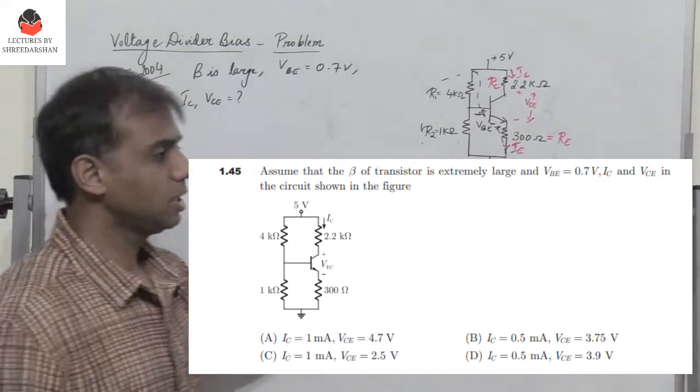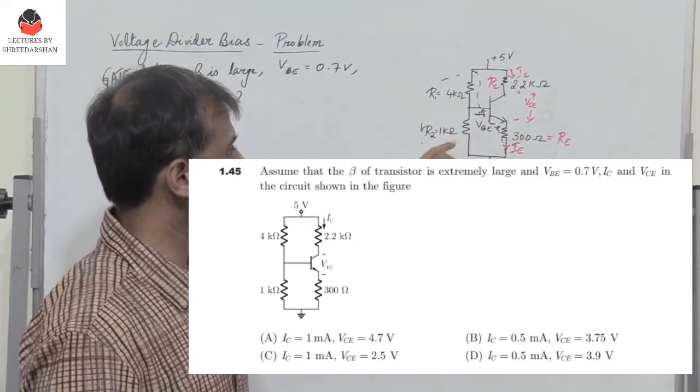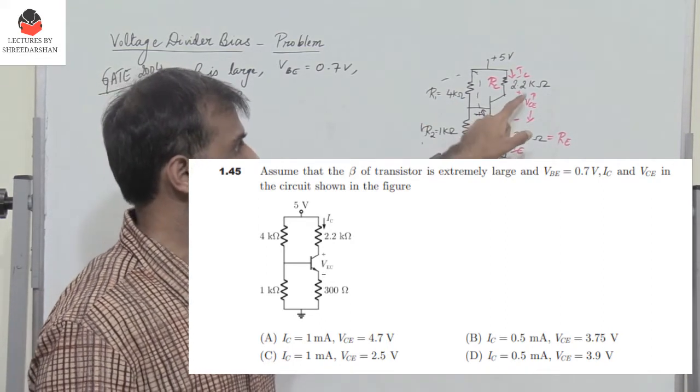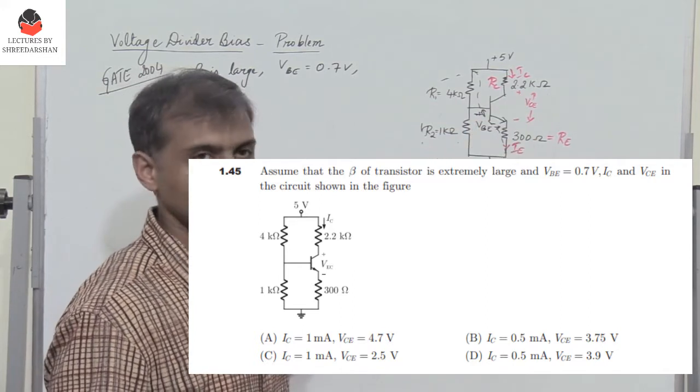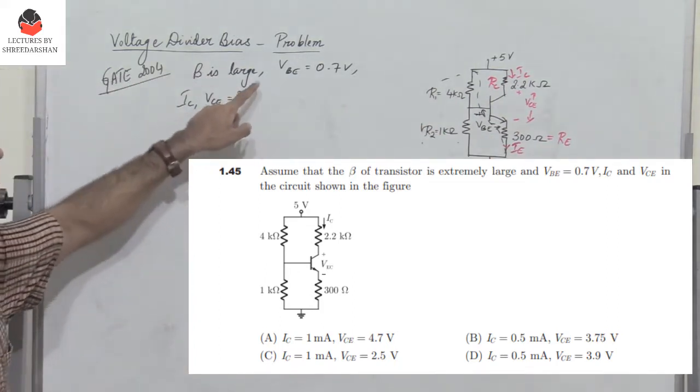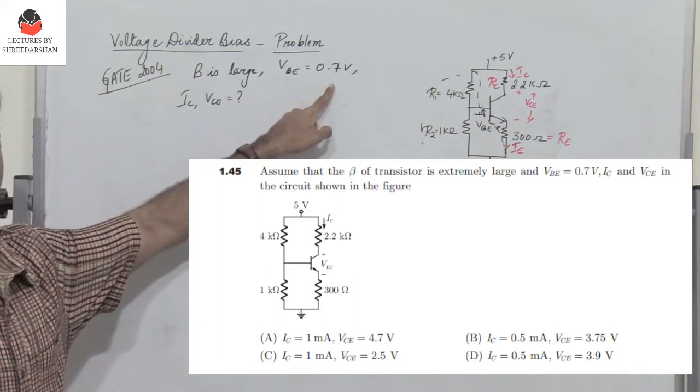The circuit has been given where R1 is 4k, R2 is 1 kilo ohm, Re is 300 ohms, and Rc is 2.2 kilo ohms. We are asked to find the value of Ic and Vce, given that Vbe is 0.7 volts.